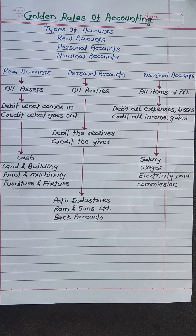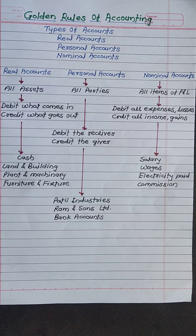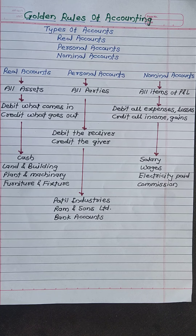The third account is Nominal Account. Nominal Account contains all items of profit and loss. The rule for Nominal Account is: debit all expenses and losses, credit all income and gains. The examples of Nominal Accounts are: